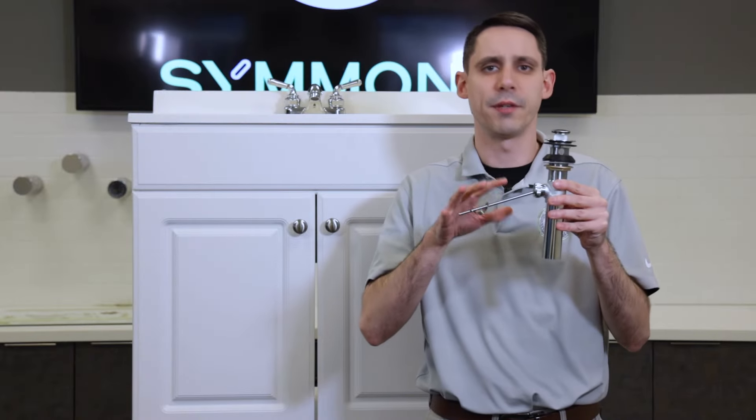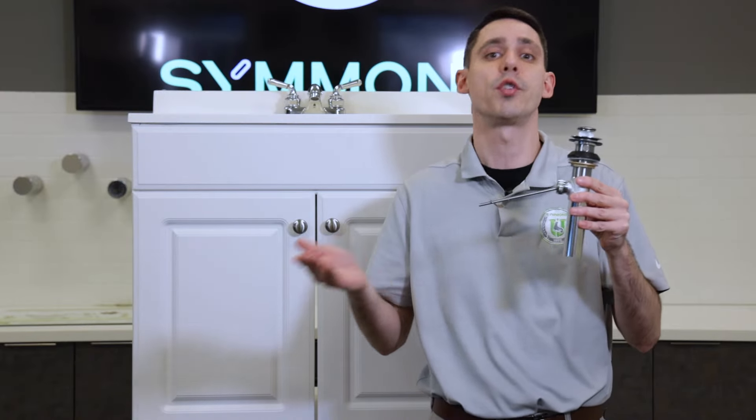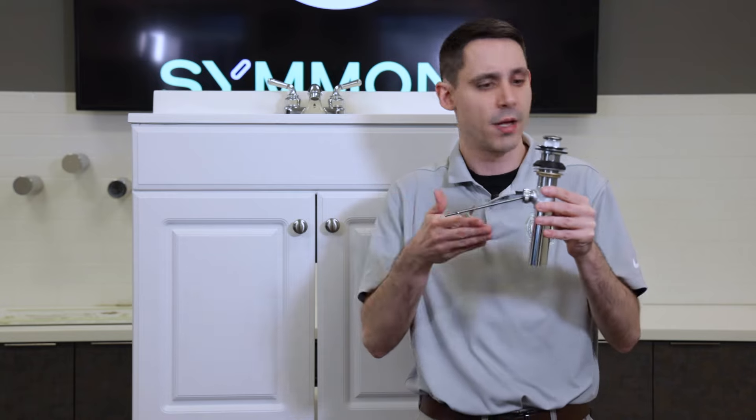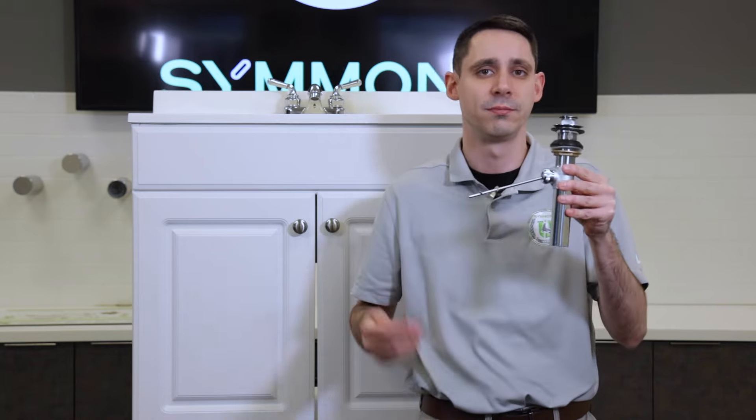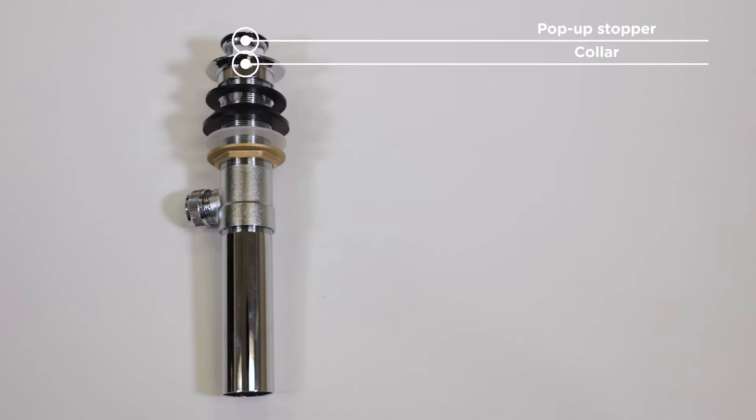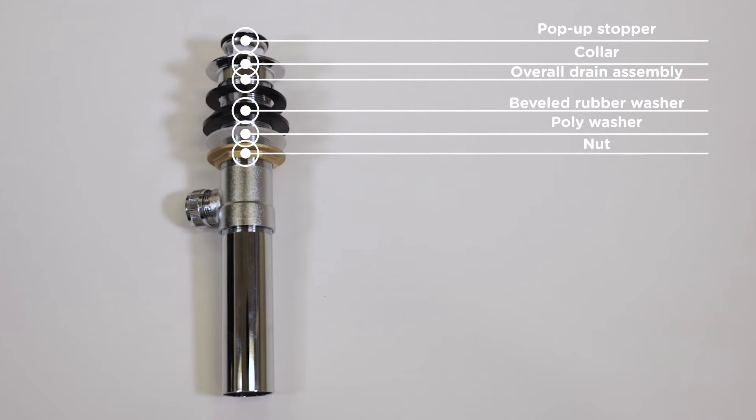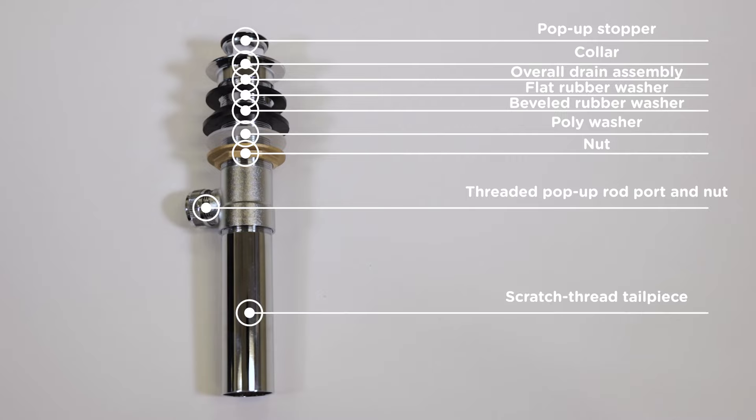Let's break down the pop-up assembly first so we're on the same page with what terms we'll be using to describe the parts. From the top to the bottom we have the pop-up stopper and the collar, these two are visible from inside the sink, the overall drain assembly with the overflow cutout, the nut, poly washer, beveled rubber washer, and flat rubber washer, the threaded pop-up rod port and nut, and the scratch thread tailpiece.